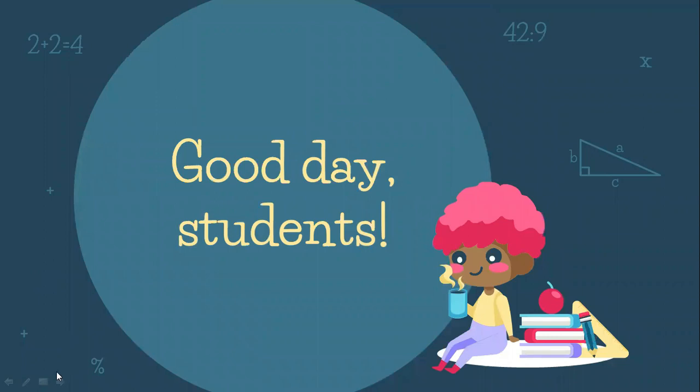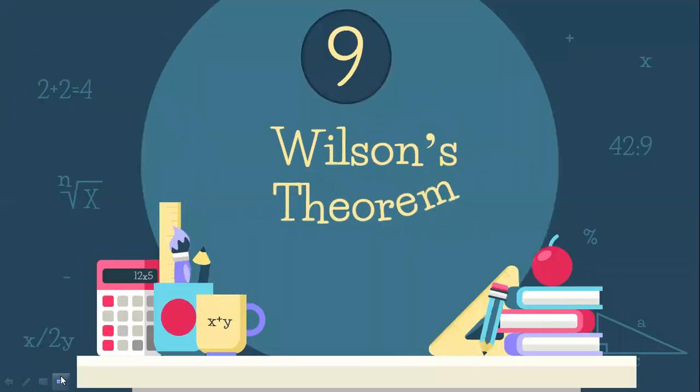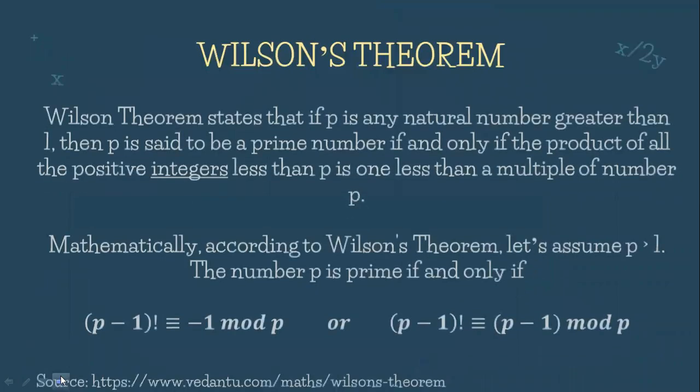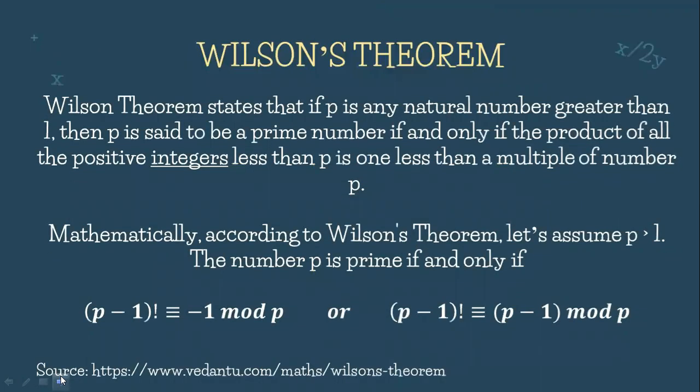Good day my dear students! For today's video, we're going to talk about Wilson's Theorem. Wilson's Theorem states that if P is any natural number greater than 1, then P is said to be a prime number if and only if the product of all the positive integers less than P is 1 less than a multiple of P.